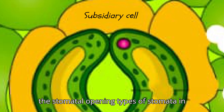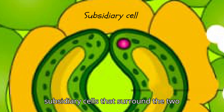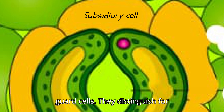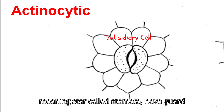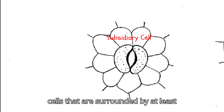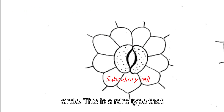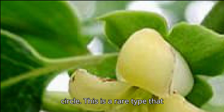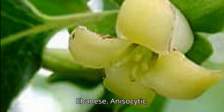Types of stomata in angiosperms are based on the size, shape, and arrangement of the subsidiary cells that surround the two guard cells. They are distinguished for dicots. Actinocytic, meaning star-celled, stomata have guard cells that are surrounded by at least five radiating cells forming a star-like circle. This is a rare type that can be found in the family Ebenaceae.